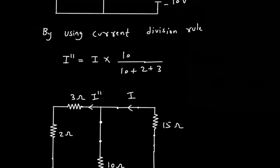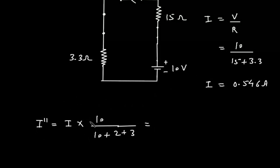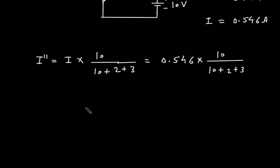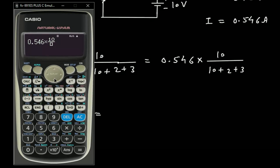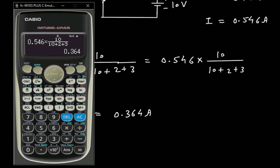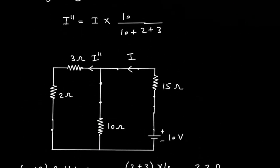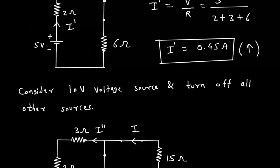But we have to find I double prime. I double prime equals total current I, which is 0.546, multiplied by 10 divided by 10 plus 2 plus 3. Therefore I double prime equals 0.546 into 10 divided by 15, which is 0.364 ampere. The direction of I double prime is downward through the 2 Ohm resistor.